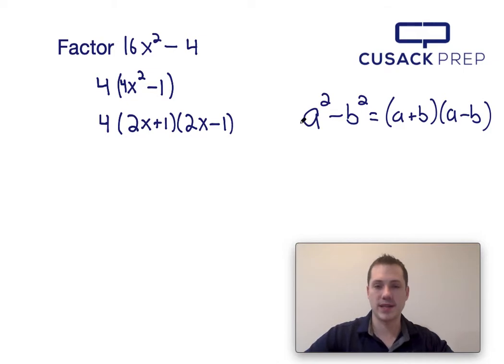If 4x squared is a squared, then a must be 2x. And if b squared is 1, then b must also be 1.